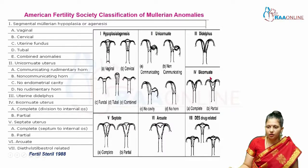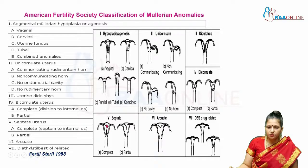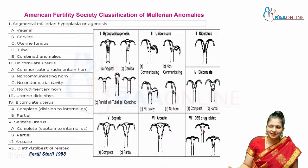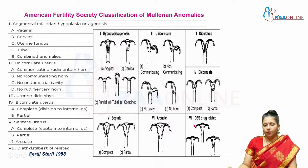Class 4 is the bicornuate uterus, which can be complete or partial. Unlike didelphys which has two cervices, the bicornuate uterus has a single cervix. Class 5 is the septate uterus, where the Mullerian ducts have fused but the intervening septum has failed to dissolve — the septum can be complete or partial. Class 6 is the arcuate uterus, which is simply an arc in the fundus. Class 7 is iatrogenic, caused by diethylstilbestrol taken as an antiemetic in the first four months of pregnancy when carrying a female baby — which is why diethylstilbestrol has since been withdrawn.